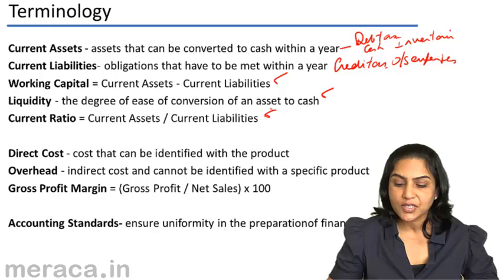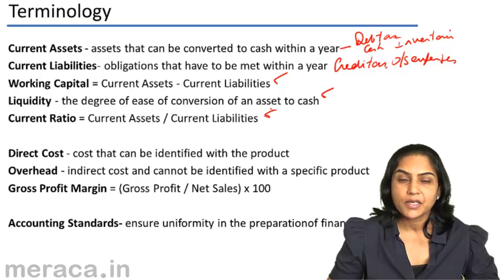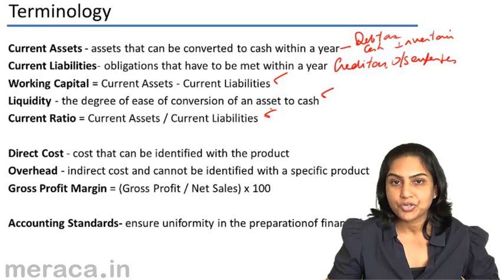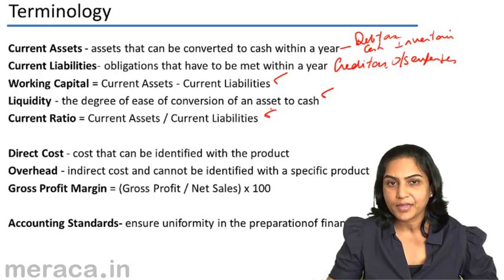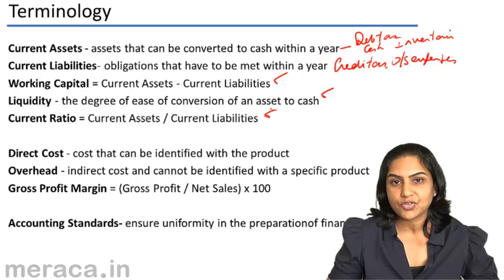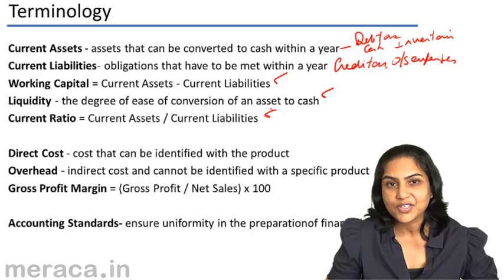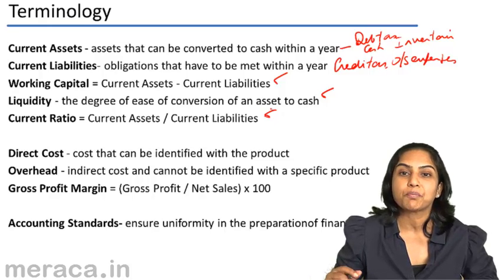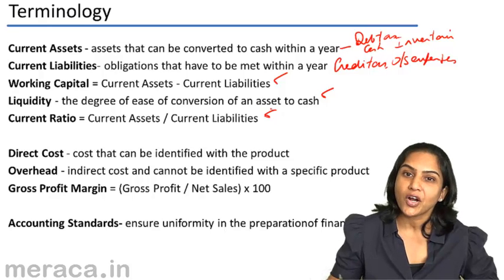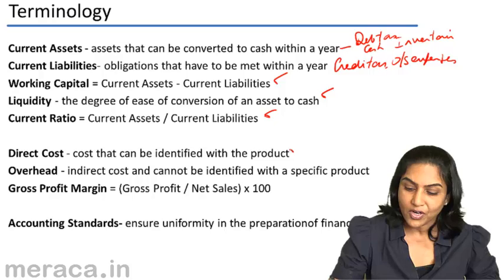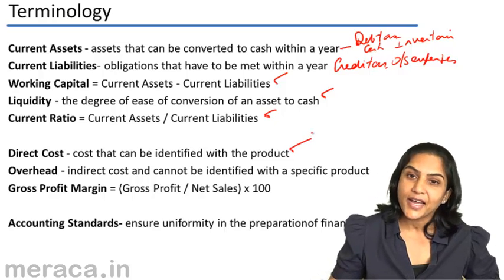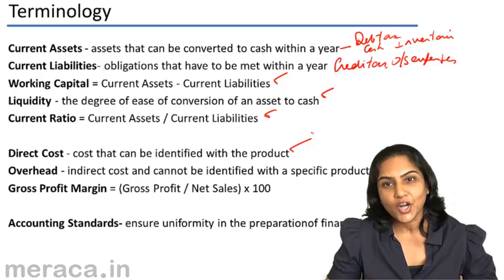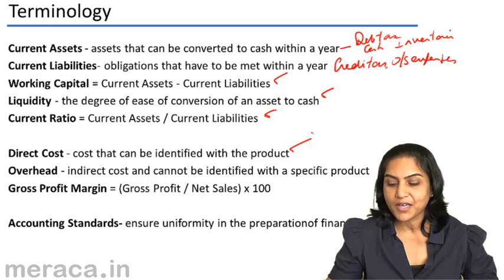Direct cost is a cost that can be identified with the product — it can directly relate to the product. For example, in a cake shop, flour, sugar, and butter are materials which can be directly identified with the cake. But the cost of telephone charges, electricity, and rent cannot be related directly to each piece of cake. Those costs are not direct costs; they are called indirect costs, also known as overheads. Overheads cannot be identified with a specific product or process.